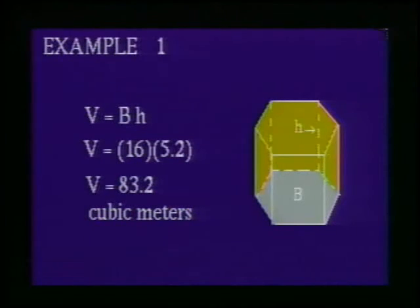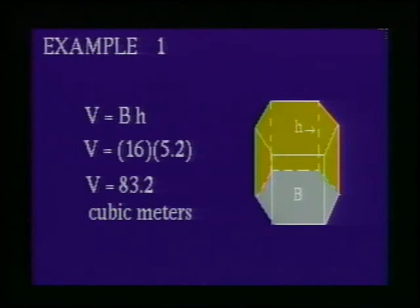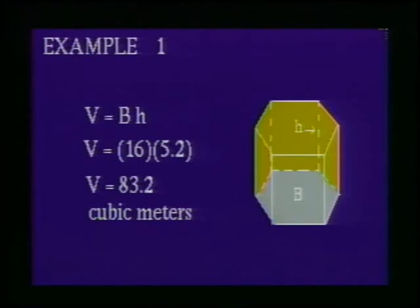Since we have a prism, we will use the formula V equals capital B times H, where capital B is the area of the base and H is the height. We are given that the area of the base is 16 meters squared and the height is 5.2 meters. Substituting these values into the formula and solving, we find the volume of this hexagonal prism is 83.2 cubic meters.